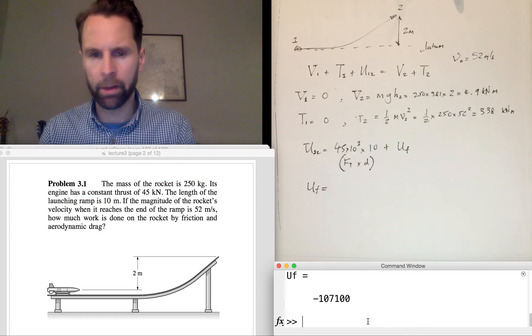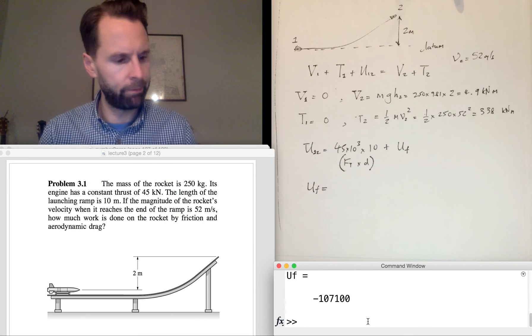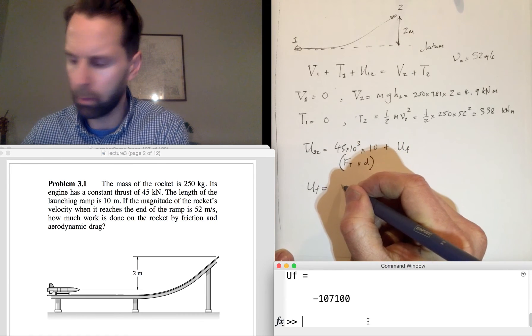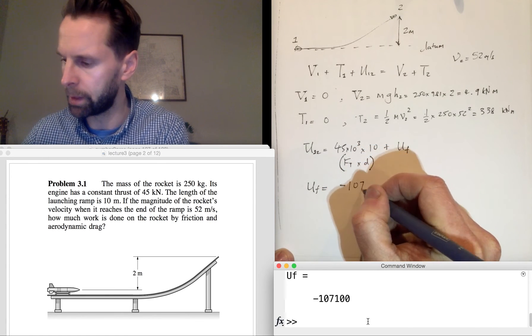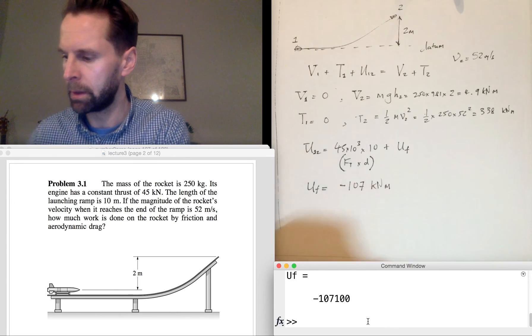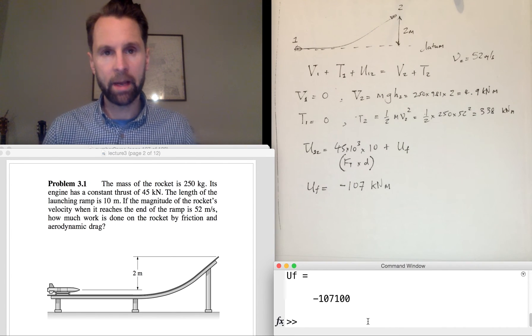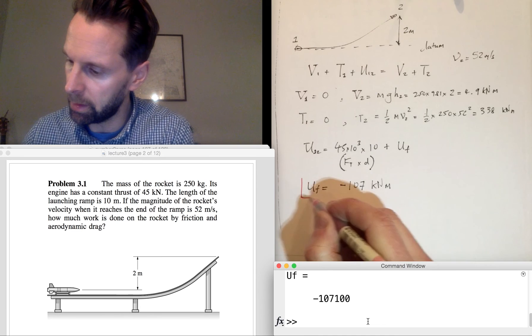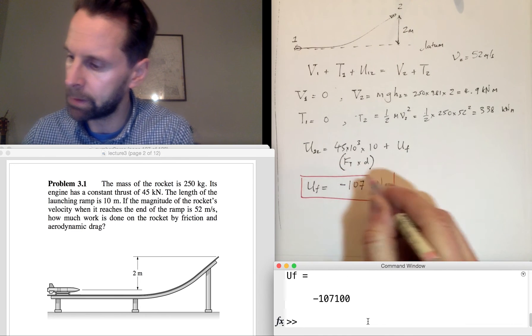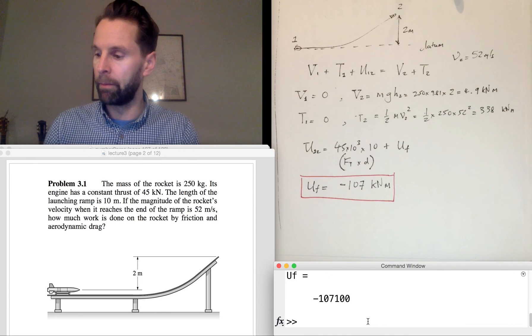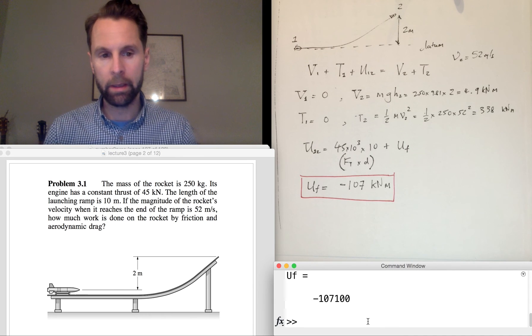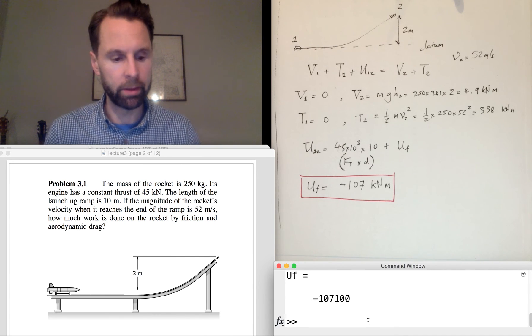And that's our answer. That's minus 107 kilonewton-meters. And that's negative because obviously the work done on the rocket is negative, because it removes energy from the system, because it's a non-conservative force—well, the combined action of friction and aerodynamic drag.